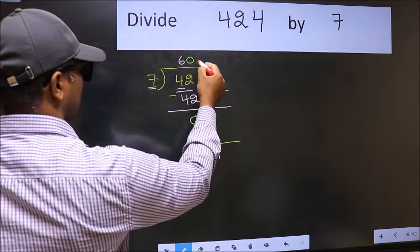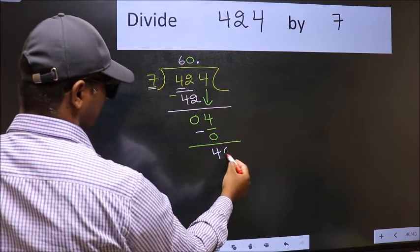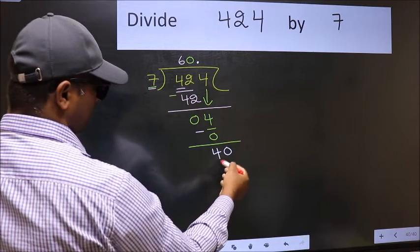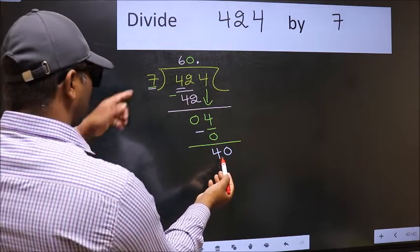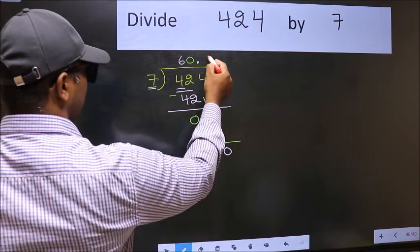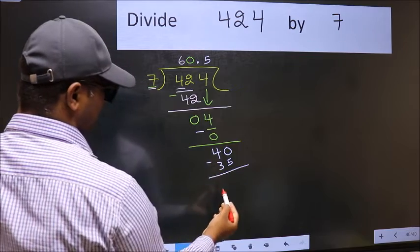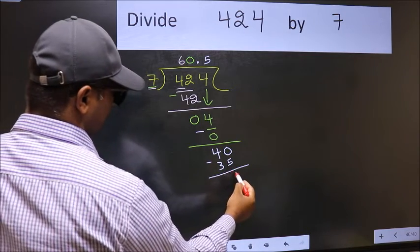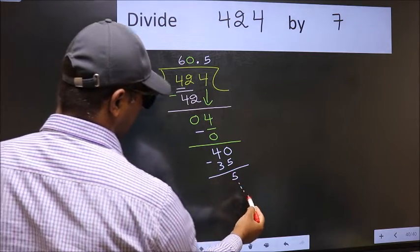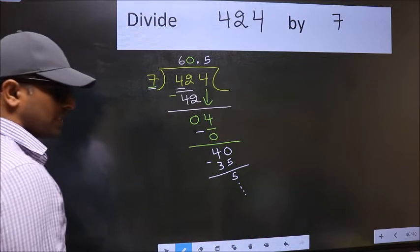So now you can put the dot and take 0, giving us 40. A number close to 40 in the 7 table is 7 times 5 equals 35. Now you should subtract: 40 minus 35 equals 5, and continue the division. I am not doing that.